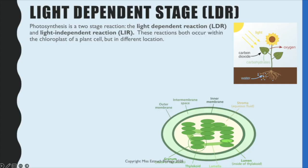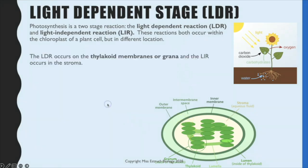The light dependent stage of photosynthesis involves a series of reactions and it is the first stage in photosynthesis. The second one is the light independent reactions. The light dependent reactions occur within the chloroplast, specifically on the thylakoid membrane, or if you have stacks of them, it's known as a granum for singular or grana for plural. The light independent reactions occur in the stroma, which is the fluid filled centre.